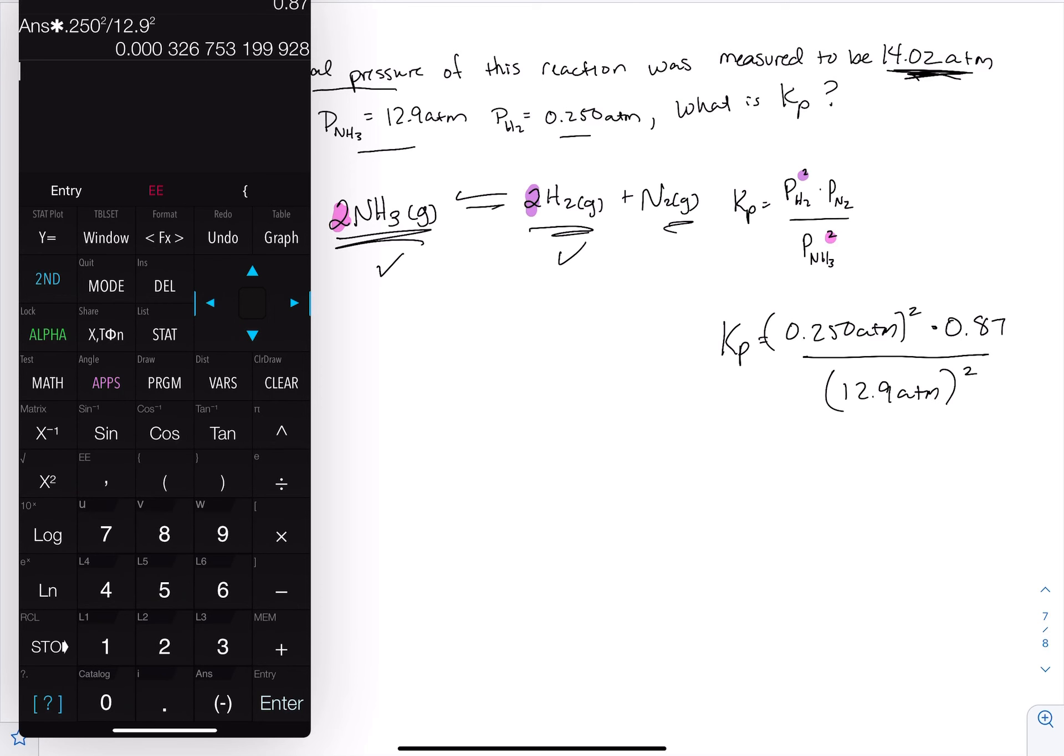I get Kp is equal to - I'm going to do it in scientific notation with two sig figs - 3.3 times 10 to the negative fourth.